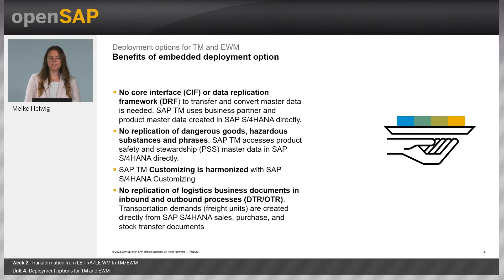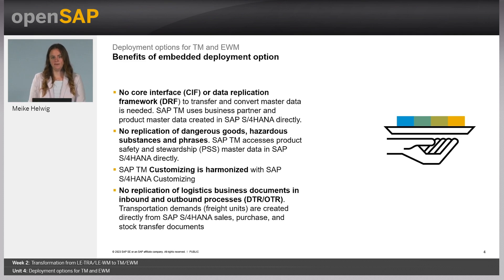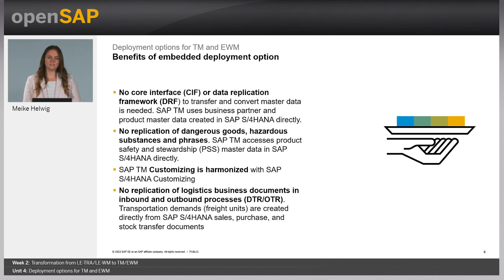You also have no duplicates in your S/4HANA TM system. The OTR and DTR — the order-based transportation requirement and the delivery-based transportation requirement — are not present. These duplicates only exist if you have a standalone system.